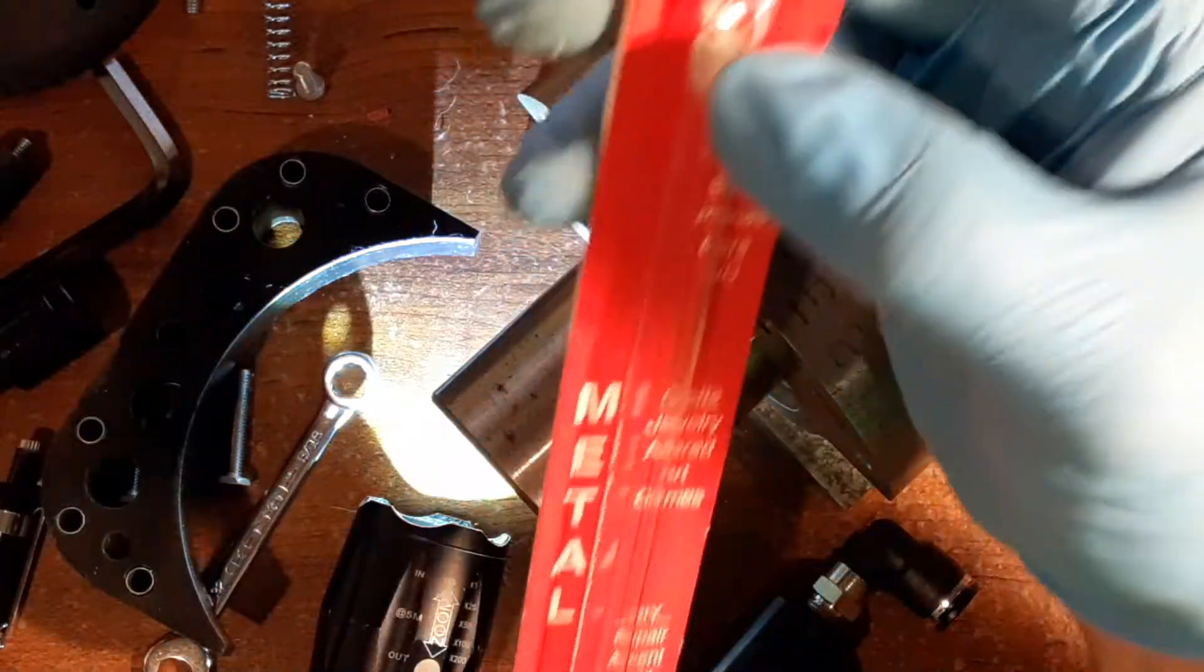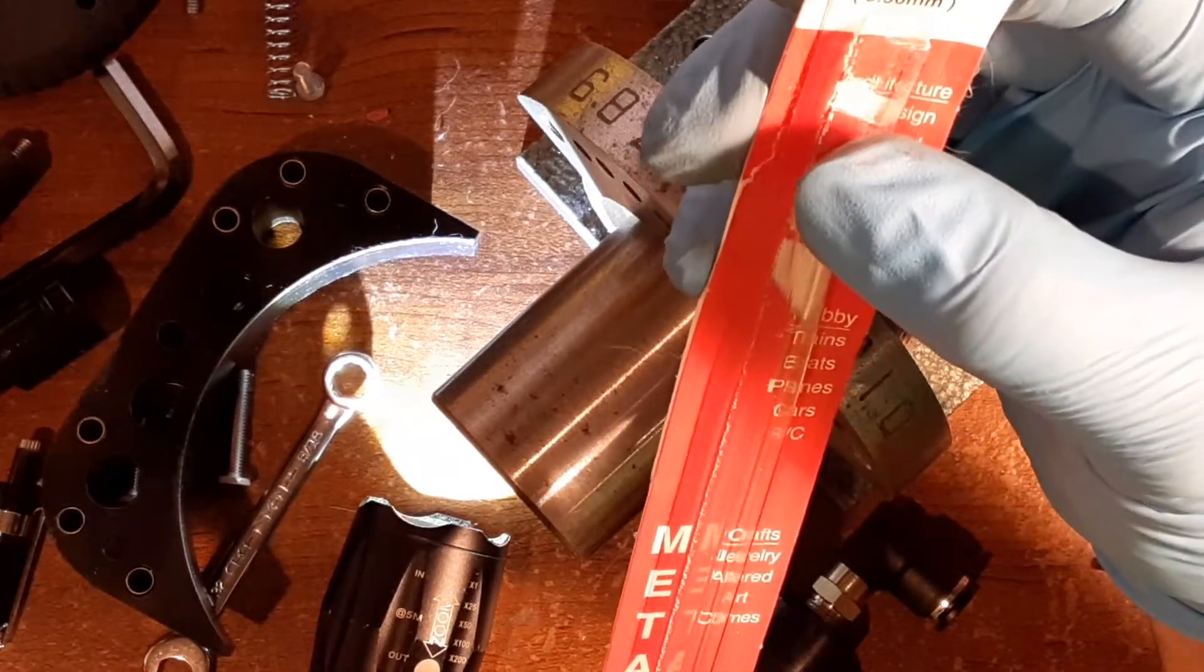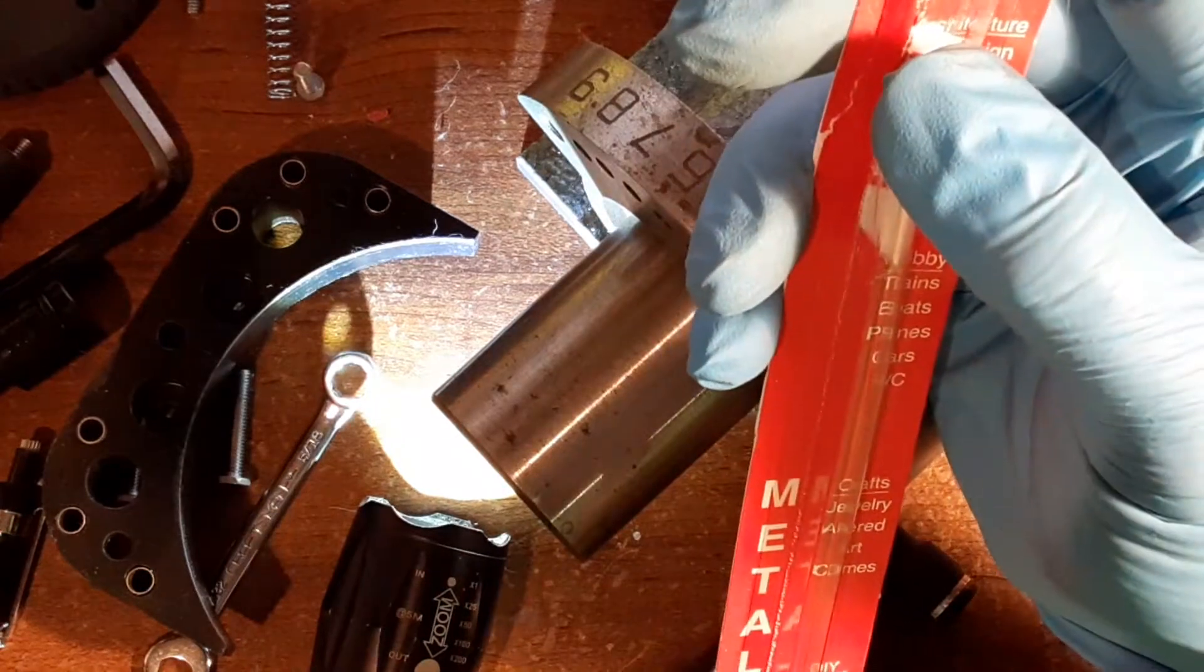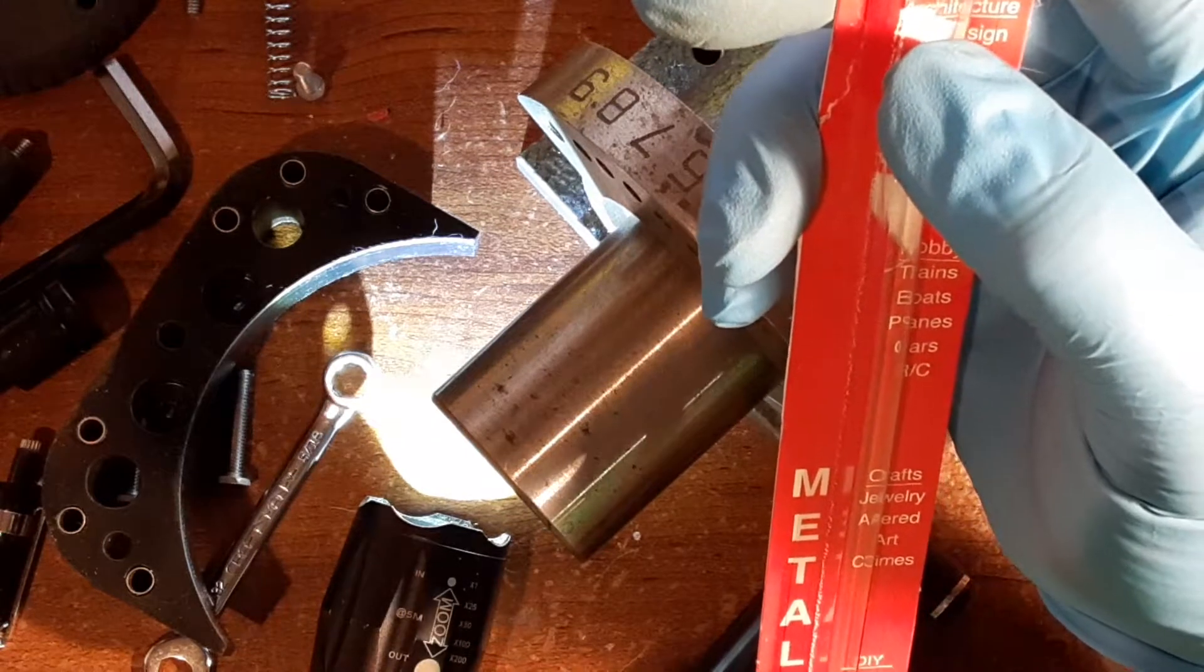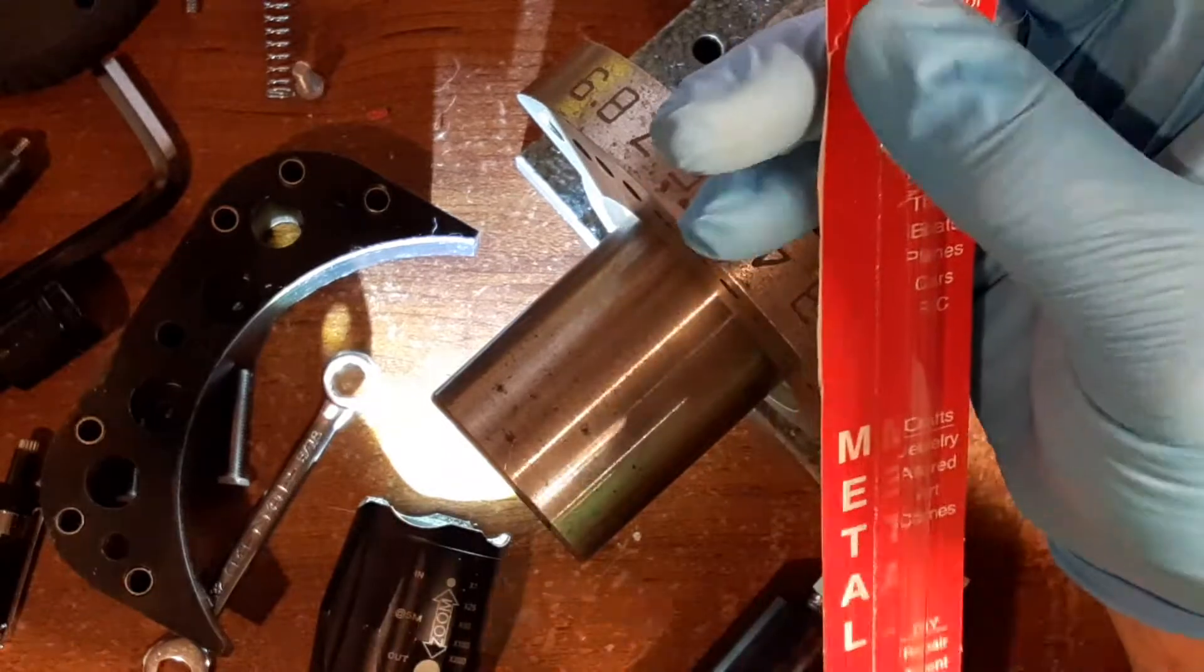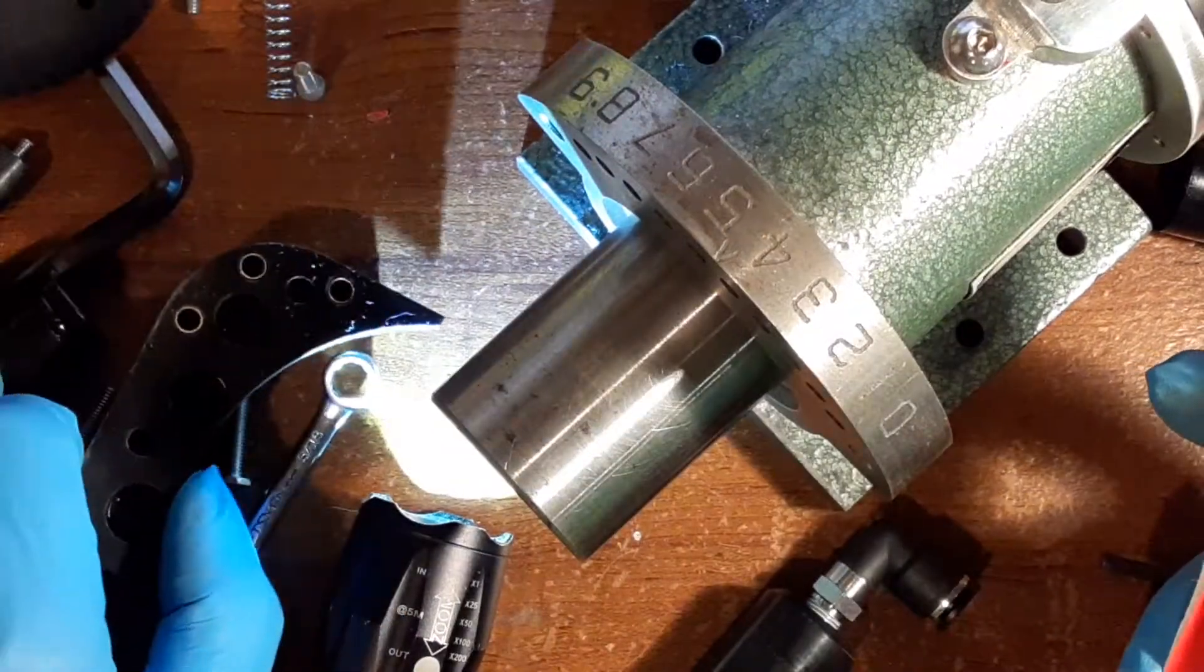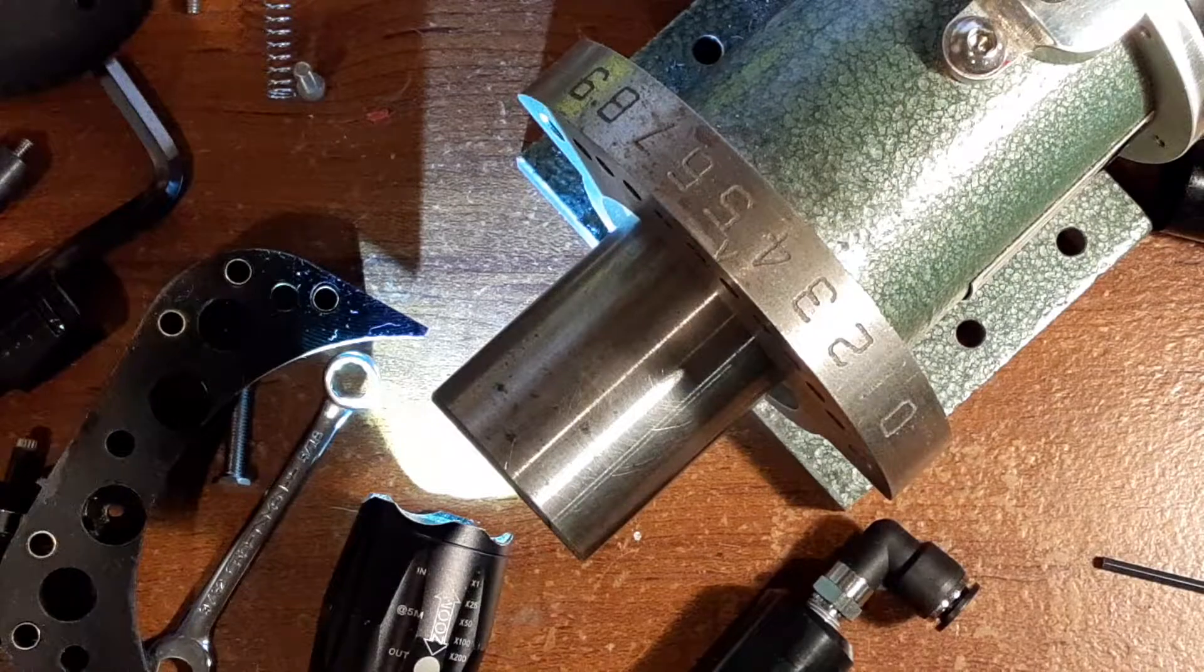Now what I used was this K&S brass tube. I think it's 7/32 by 0.014 thousandths, 5.56 millimeter. Got this at Ace Hardware, you can probably order it online too. It's just brass tube and I just cut it, just press it into those holes and that acts as my bearing surface. Yeah, it works out real well.